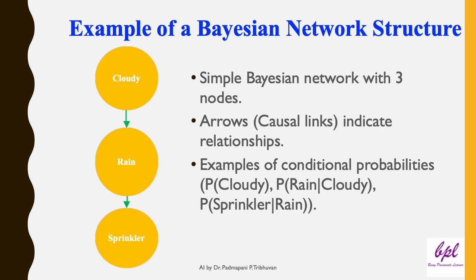Consider three variables: Cloudy, Rain, and Sprinkler. Cloudy might influence whether it rains. Rain might determine whether we turn on the sprinkler. The arrows here indicate causal relationships — cloudy to rain, and rain to sprinkler. We can use probabilities to describe these relationships, such as the probability of rain given that it is cloudy, or the probability of turning on the sprinkler given rain. This structure helps us break down complex systems into manageable relationships.